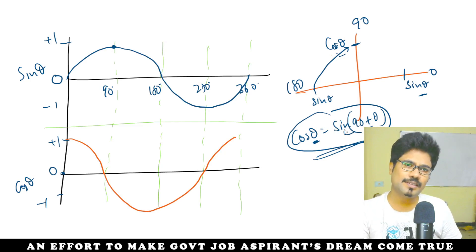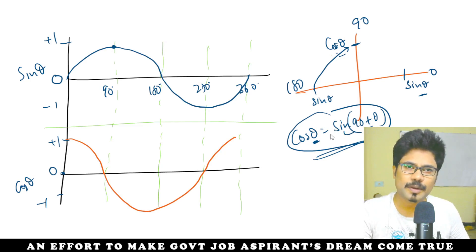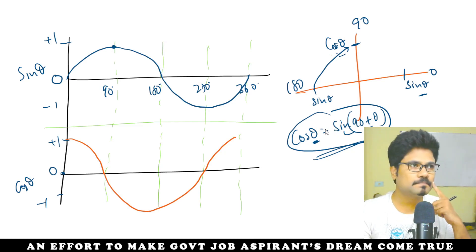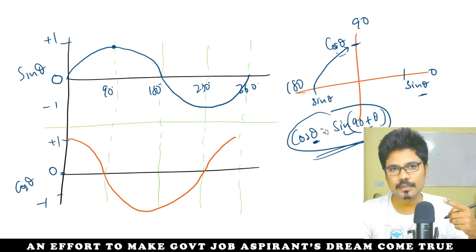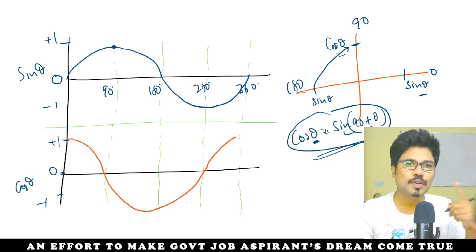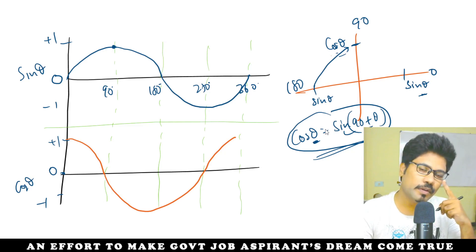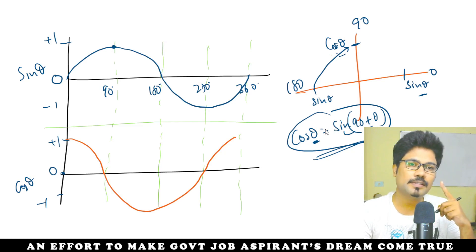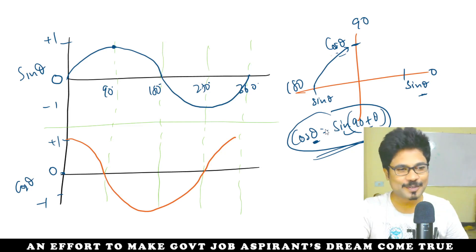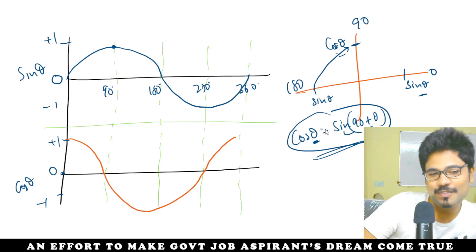In electronic devices and circuits, we observe this using a cathode ray oscilloscope — sin theta and cos theta. For example, capacitors and full wave or half wave rectifiers use this property. I don't want to go too much into that.